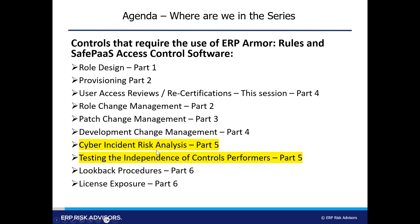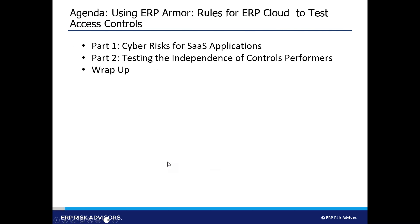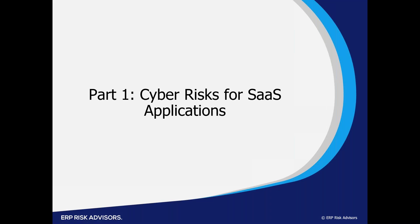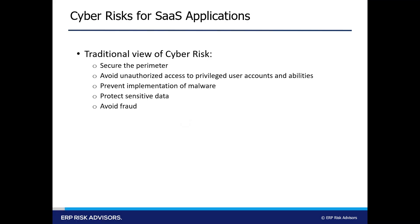This session has two parts: first we'll cover cyber risks, then testing the independence of control performers, followed by a quick wrap-up. When we put out this series, we didn't have a full appreciation for the timing of when the SEC would come out with their guidance. So it's a good time to give you some feedback and best practices related to responding on the preparedness side and the disclosure side. Since we're focusing purely on ERP Cloud and HCM Cloud in the series, the challenge is campaigning the big picture as it relates to cybersecurity risk.